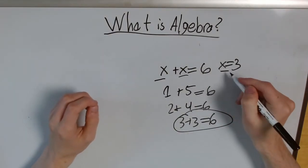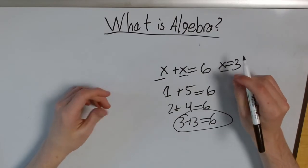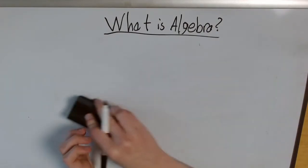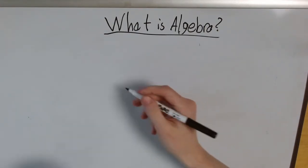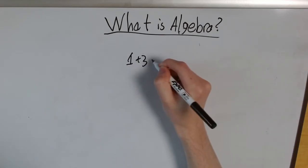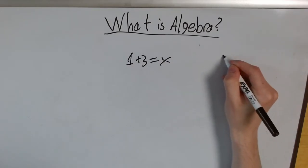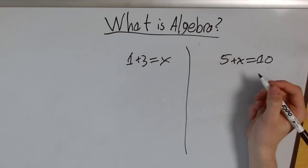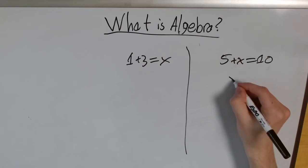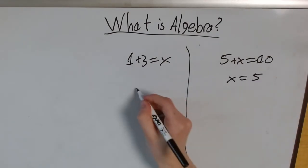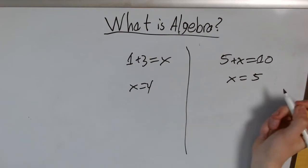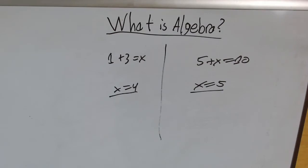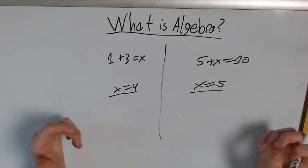However, a single variable can represent different values across multiple different equations. For example, if I had two separate problems, 1 plus 3 equals x and 5 plus x equals 10, right? If these were two separate problems, and we found that x equals 5 here, x equals 4 here, that's okay. Our x can equal different values in different problems. They just can't equal different values in the same problem.